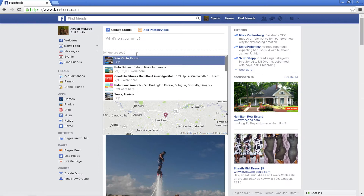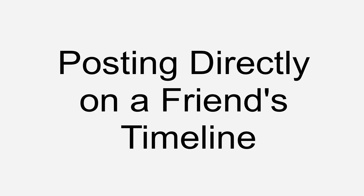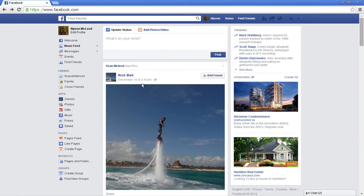How can you get your friends' attention? By posting directly onto a friend's timeline, you can let them know that what you have to say is meant for or about them. They will be notified of your post. Posting on a friend's timeline is more direct but not private — it's similar to having a loud discussion in public. Your friends and their friends will still be able to see what you've posted, and they'll be able to comment on it too.